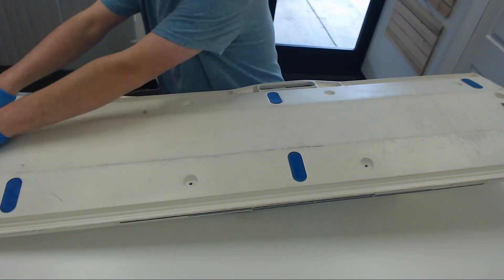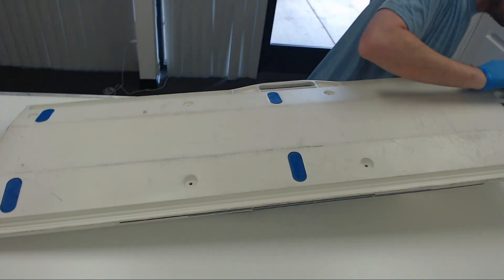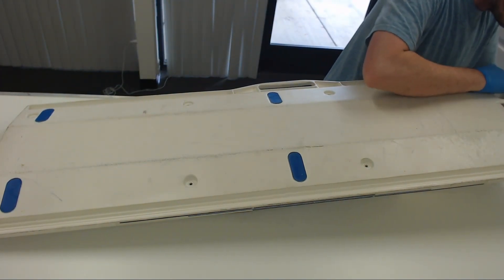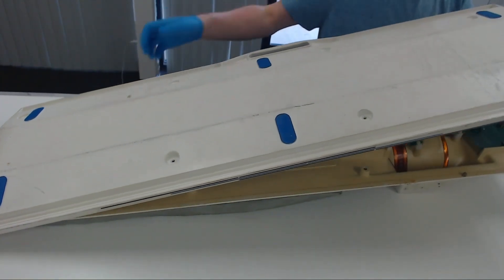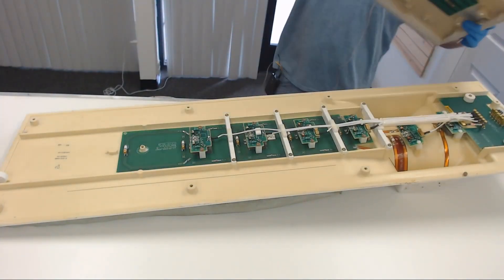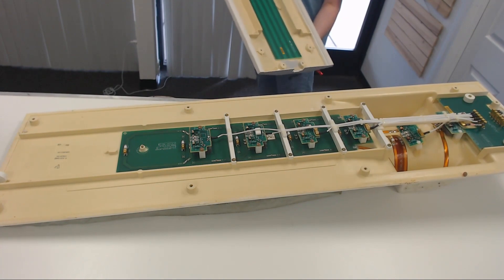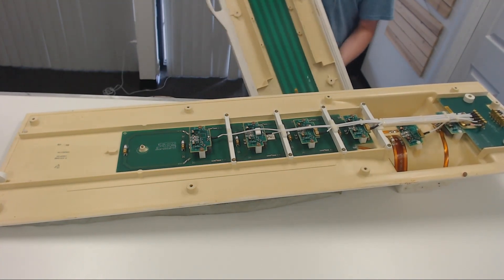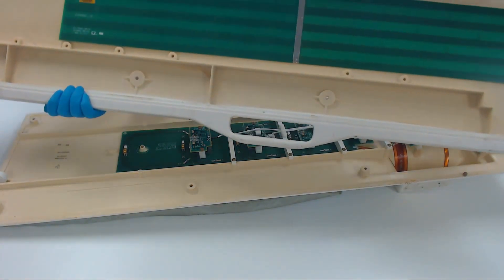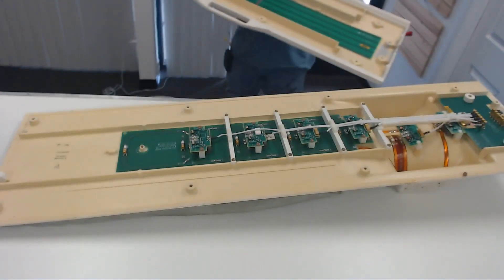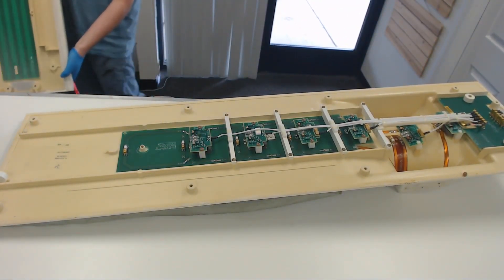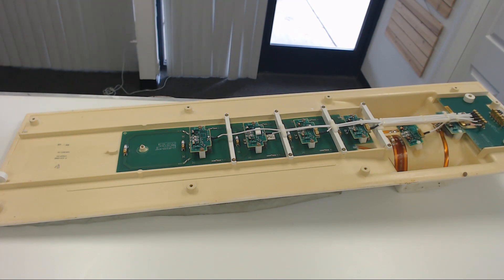There's only two screws on the back of this. That's the bottom case. There's another antenna right here, but you can't see it. There's another antenna element up here. Let's set this down in a safe place.